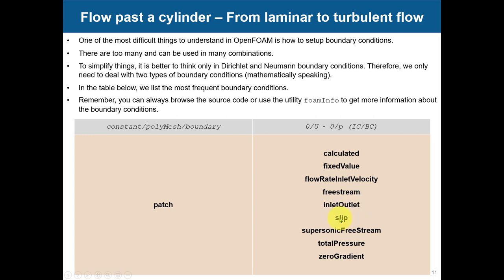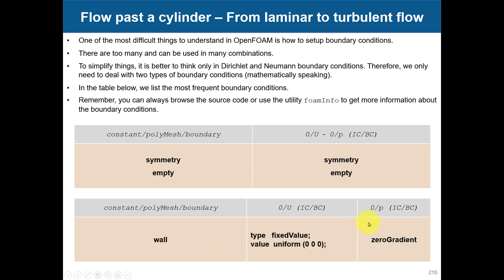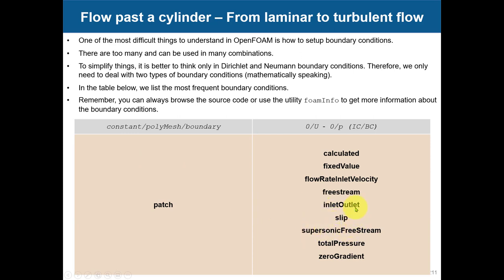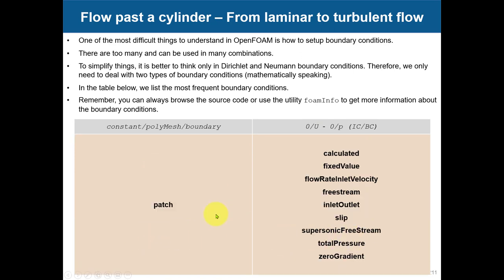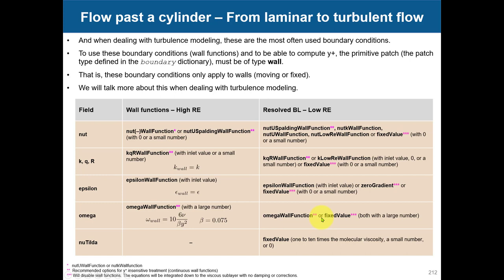The most common numerical boundary conditions for patches: fixedValue sets a value on a surface - inlet, outlet, mass flow rate or volumetric flow rate. inletOutlet handles flow coming back into the domain. slip gives you no boundary layer. zeroGradient is extrapolation. These are the most common ones we'll use in the tutorials. Remember: in constant/polyMesh/boundary, if you have symmetry or empty, you set it there, and in 0/U and 0/p you also use symmetry or empty. For walls, you set wall in both places.